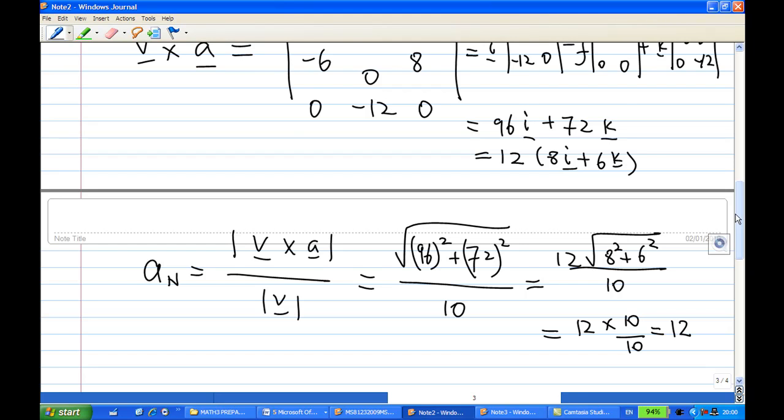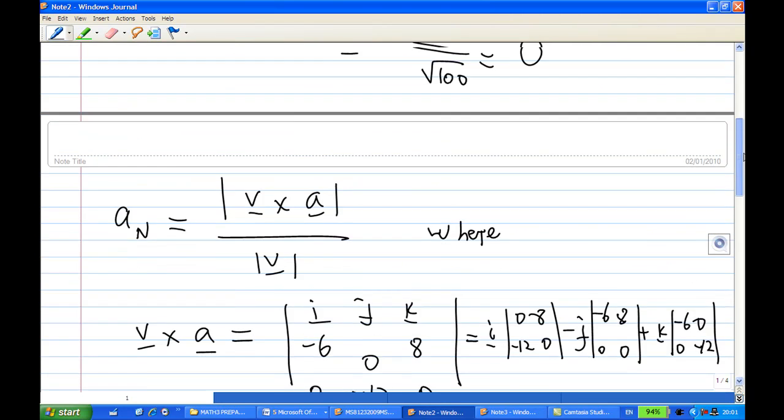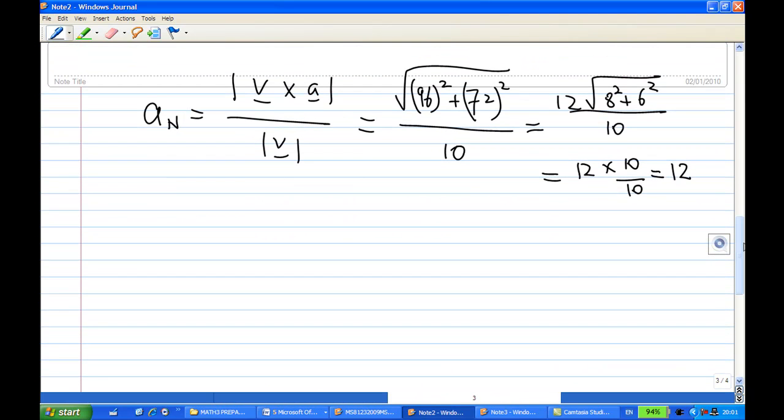Therefore, I have found that An is equal to 12 and At is equal to 0. The acceleration is At times t plus An times n. So in this case, At is 0 times unit tangent vector, and An is 12 times principal unit normal vector. This is the solution for question 5 part 2.